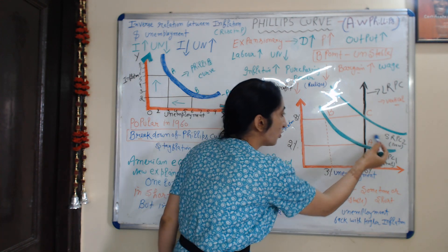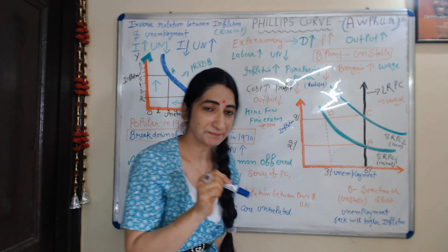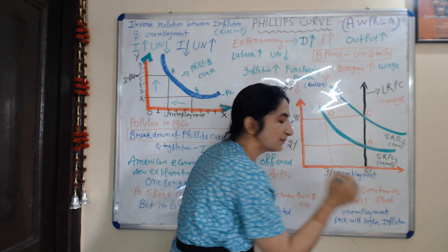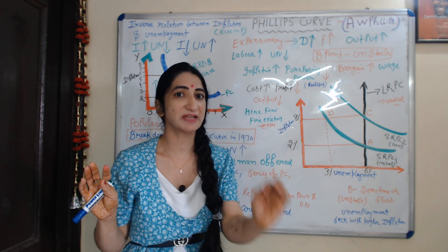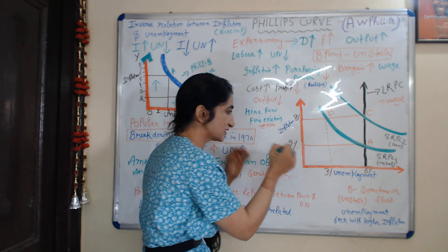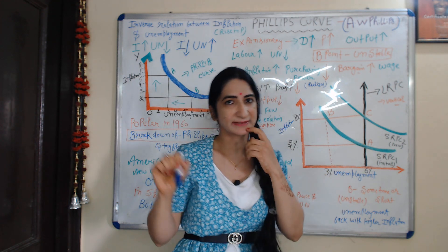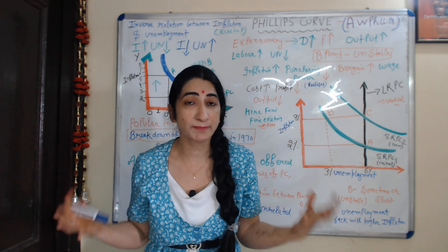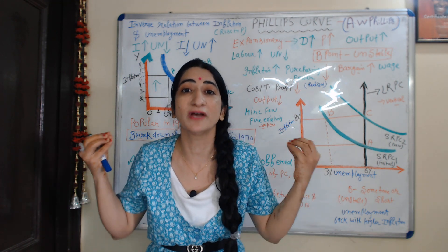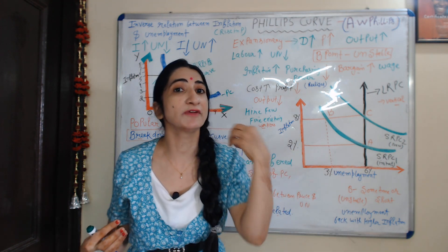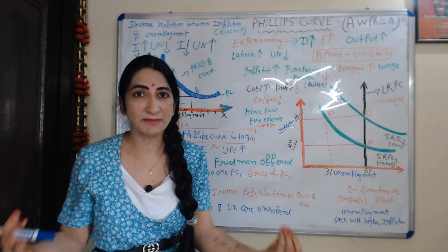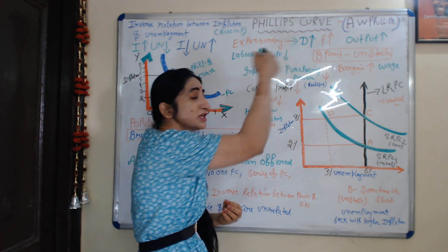Suppose our economy starts from point A. At point A, the rate of inflation is 2% and the rate of unemployment is 6%. Initially, when our economy starts from point A, the rate of inflation is 2% and the rate of unemployment is 6%. Because there is more unemployment in the economy, the government has pressure to reduce this amount of unemployment.